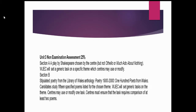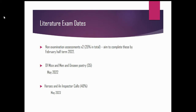We aim to complete this before the February half-term of Year 10. Looking at exam dates: the literature non-examined assessments would take place at the start of Year 10, with completion by February 2022. Your Of Mice and Men and Unseen Poetry exam would take place later that year in the summer of Year 10, and your Heroes and An Inspector Calls exam — Unit 2 — would take place at the end of Year 11, in 2023.